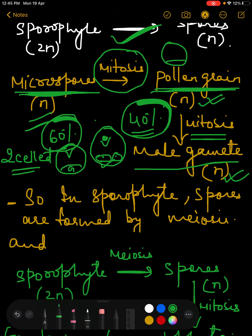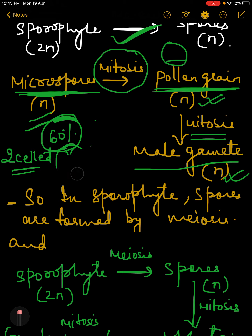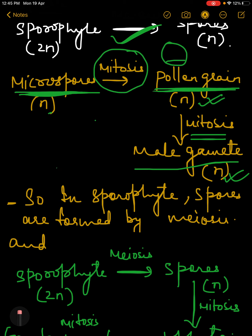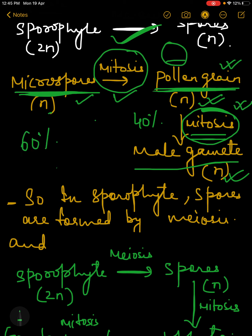Let me clarify: microspores will undergo mitosis to give rise to pollen grains. These pollen grains either undergo the next mitotic division immediately — as in 40 percent of plants — or this division takes place later on, as in 60 percent of plants. The division occurs in all types of plants, but the difference lies in the timing. In 40 percent of plants the divisions occur back to back, so immediately after pollen grain formation the third division also occurs and two male gametes are formed.